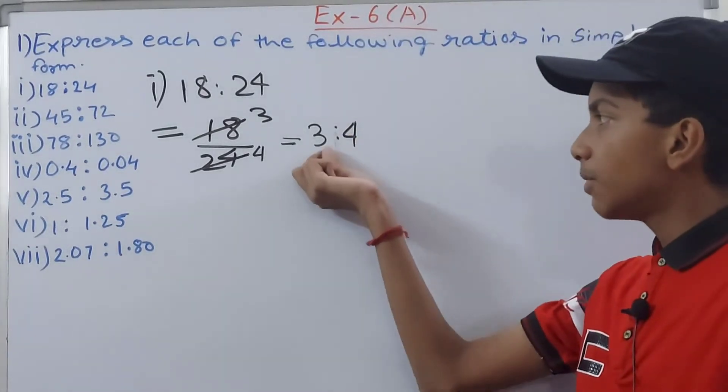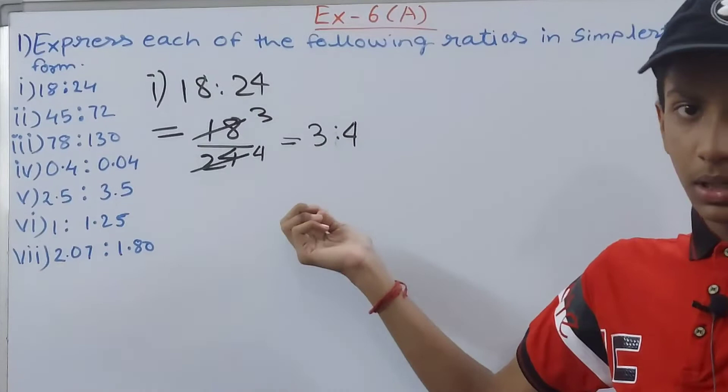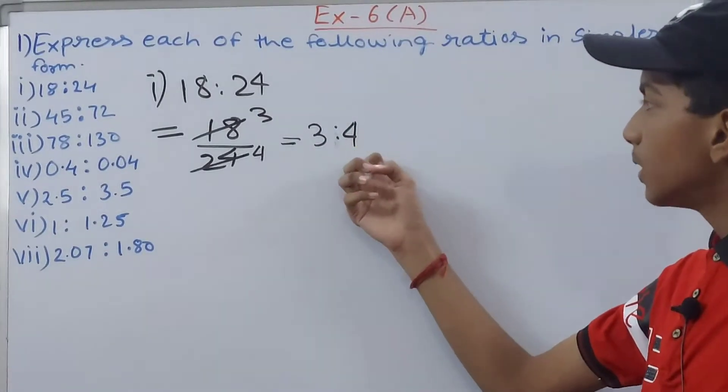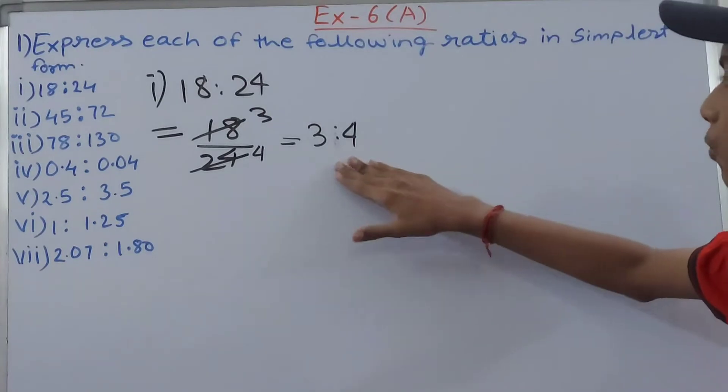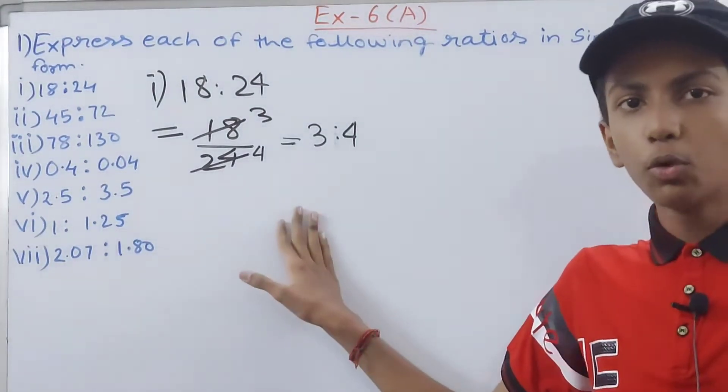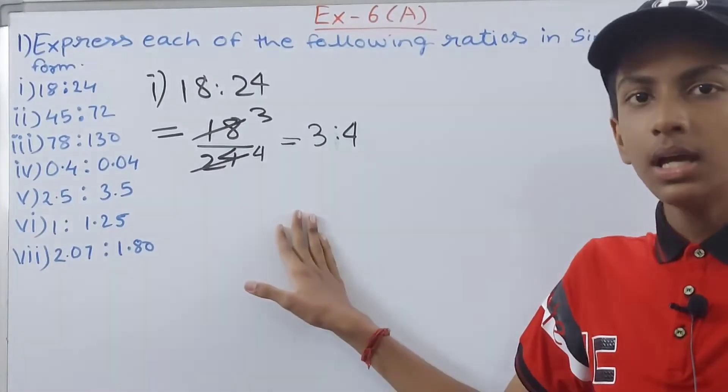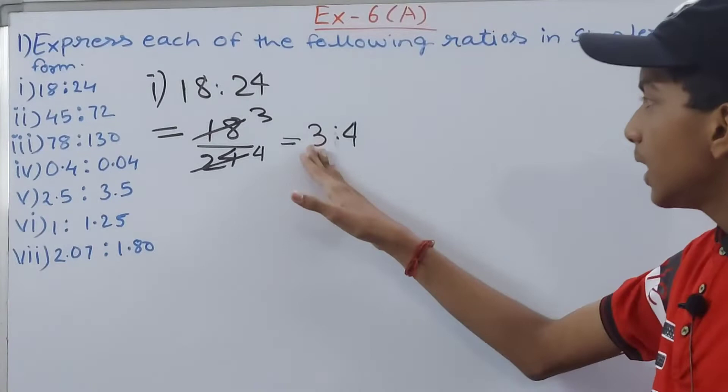So basically here this first term, you can see this one, it is called the consequent, and the next one is called the antecedent. So you can see here that 3 and 4 basically are in the simplest form because 3 and 4 both of these do not have any common factor except 1.